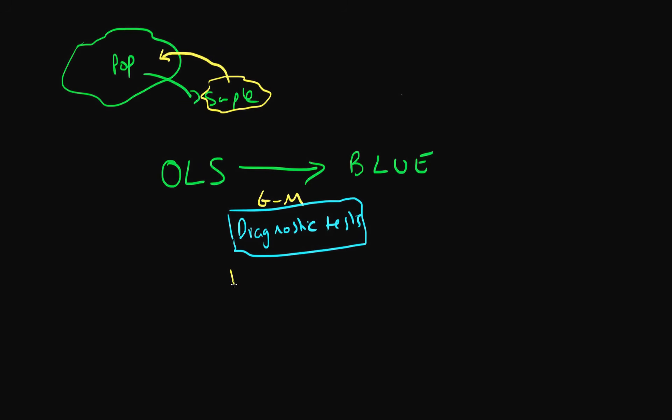If each of these tests comes out okay—so our model passes these diagnostic tests—which means the Gauss-Markov assumptions are likely upheld, then OLS estimators are likely going to be BLUE. That means they're quite good to use for inference about the population.